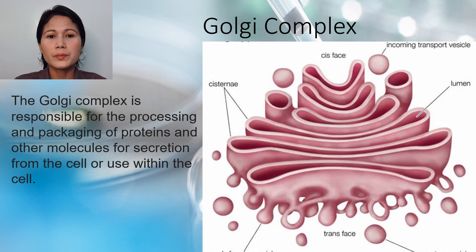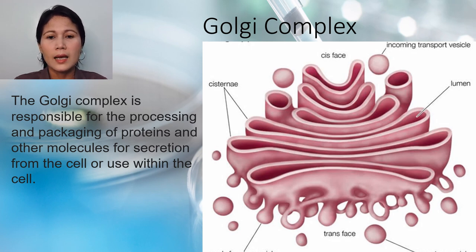Let's go to the Golgi complex. The Golgi complex is a major component of the endomembrane system, and in most cells its primary role is secretion. The term Golgi complex refers collectively to all the Golgi bodies in a cell.